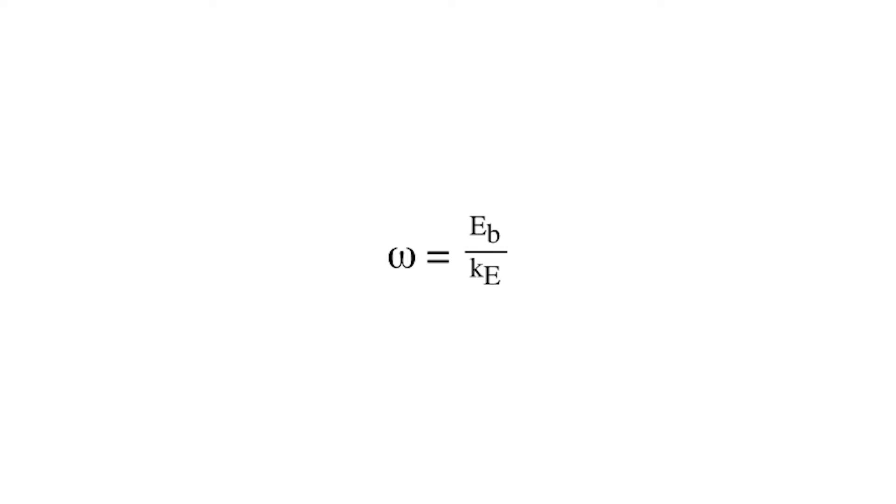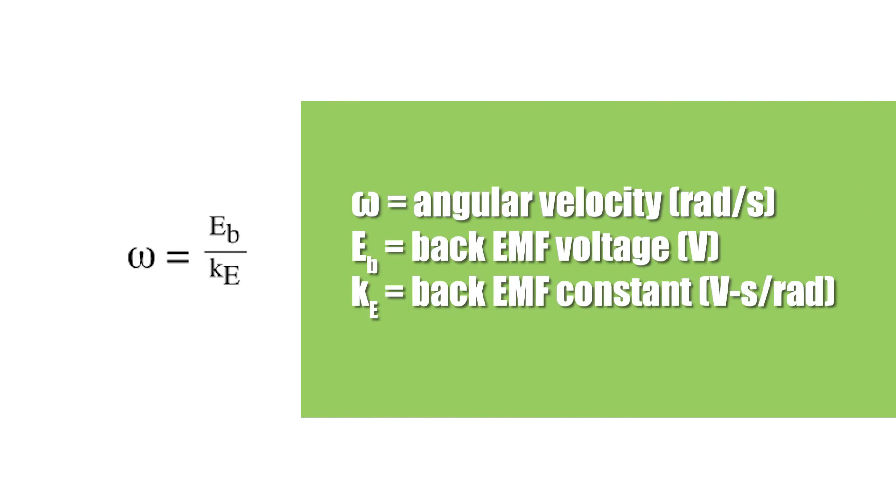So what does back EMF have to do with speed? Well, for a DC motor, angular speed is directly proportional to the back EMF that the motor generates. Notice the back EMF constant, k sub e, in this equation. This is important because motors are designed with a back EMF constant that allows the motor to draw the rated current and deliver the rated torque when running at the rated speed.